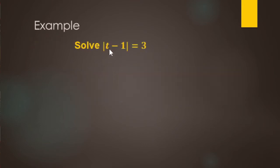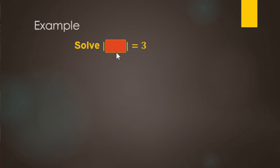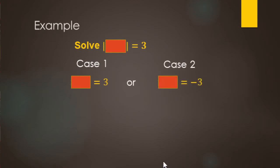We have |t - 1| = 3. This helps explain why we do what we do. Ignoring t minus 1 for now and just calling it 'the red box': for the absolute value of the red box to equal 3, the red box could be positive 3, or it could be negative 3, because the absolute value of negative 3 also equals positive 3. So we have two cases: the red box equals 3, or the red box equals negative 3.